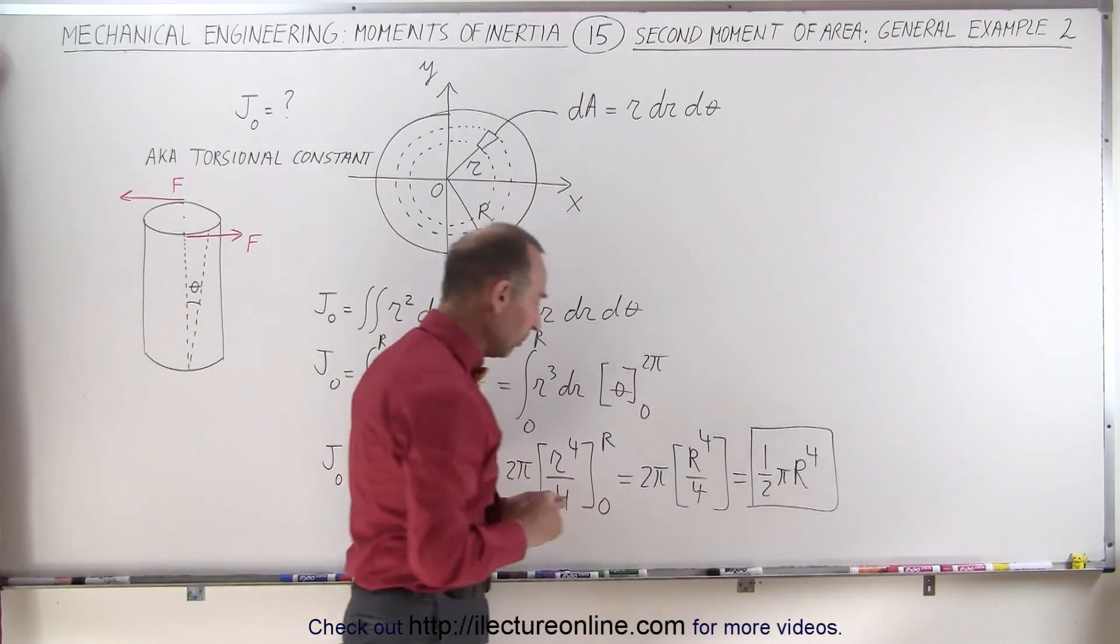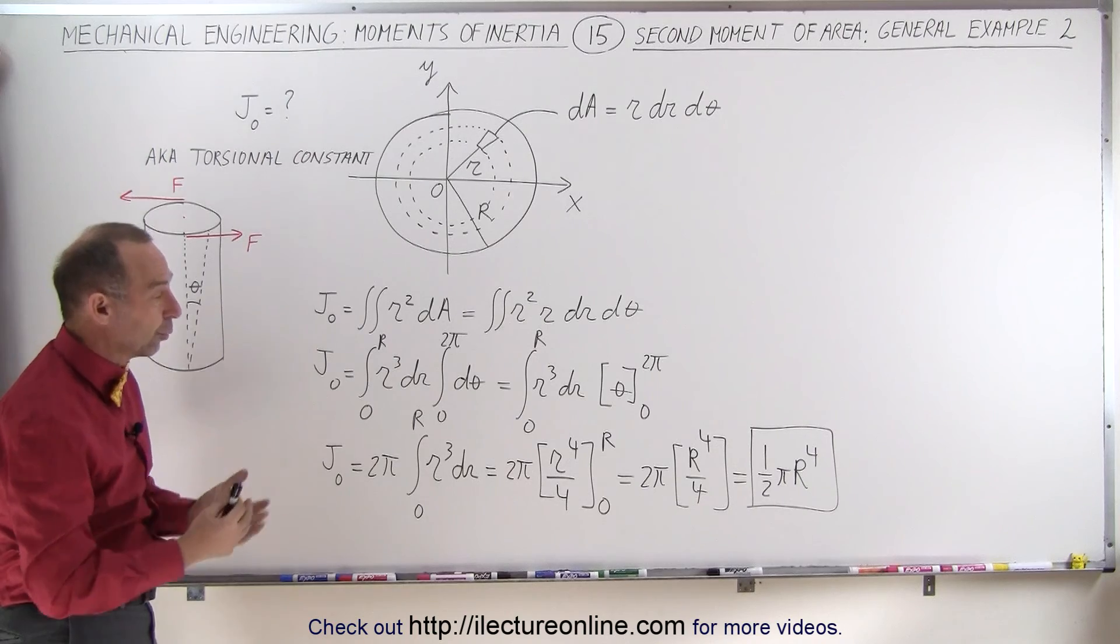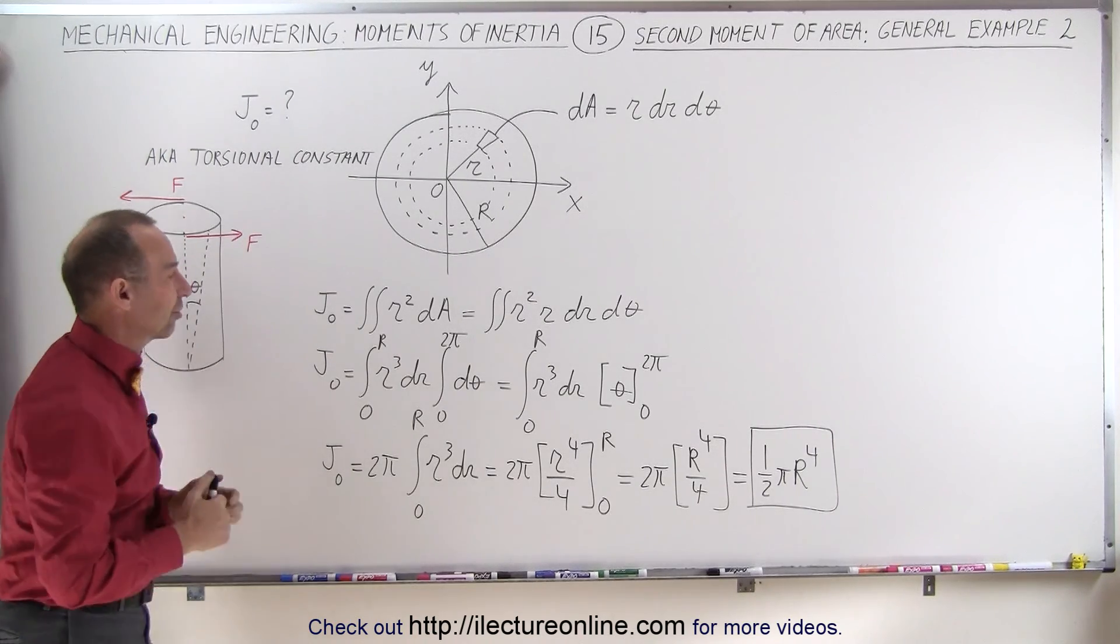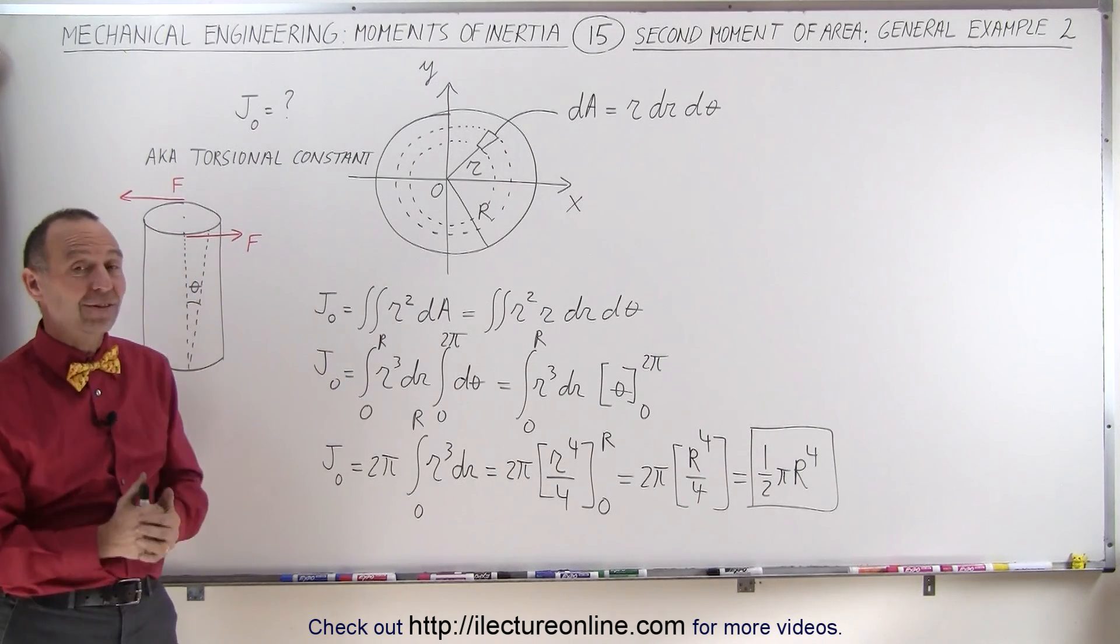And this is the general formula for the second moment of area of a circle, which is also known as the torsional constant, if you assume that to be the cross-section of a cylindrical pillar like that. And that's how it's done.